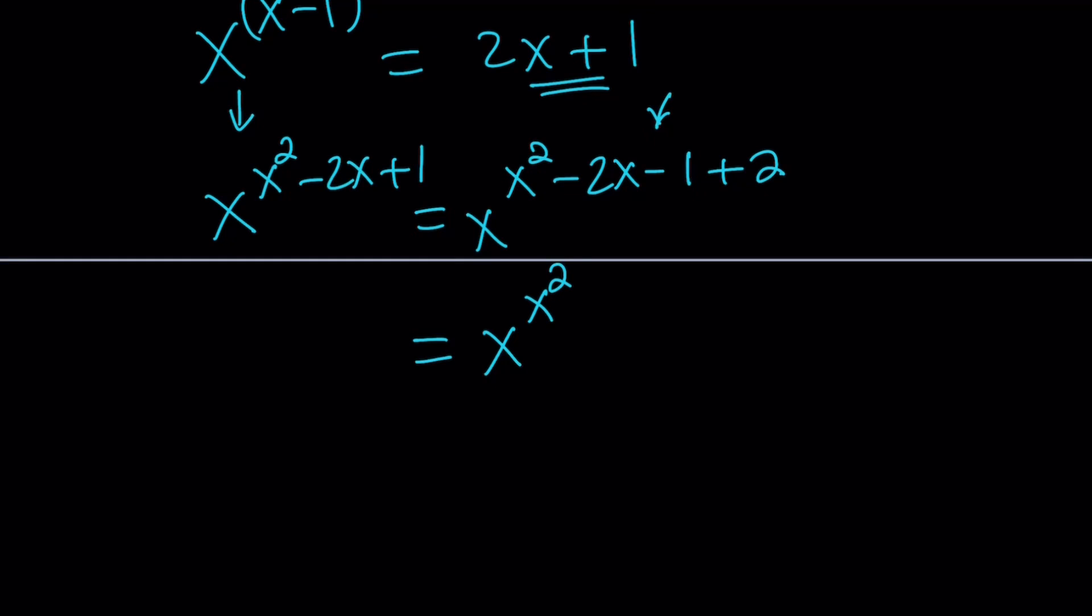And now we can write it as x²-(2x+1)+2. And yay, that's what I wanted to get. And remember, the left-hand side is x^(x²-2x+1). Now I'm happy because I got 2x+1 on the left-hand side, sort of, like here.